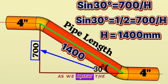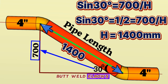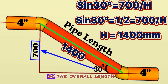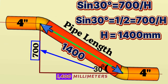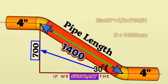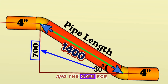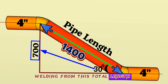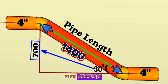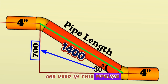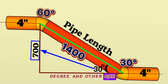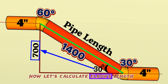The length of H is also the distance between the centers of the butt-weld elbows, so the overall center-to-center distance is 1400 millimeters. Subtracting the elbow lengths and welding gaps from this total gives us the red pipe section length. Two different elbows are used in this pipeline — one 30-degree and one 60-degree elbow. Now let's calculate the elbow lengths.